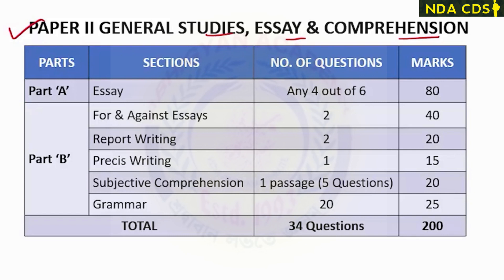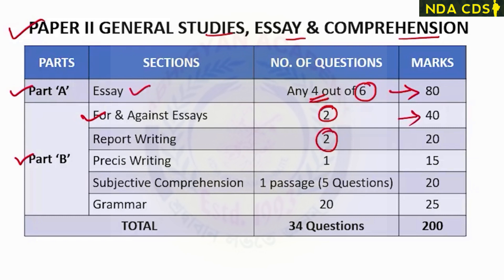Paper 2 is further divided into two parts, Part A and Part B. Part A is for essay writing. There will be a total of six options, out of which you need to attempt any four essays. Total marks allotted for essay writing is 80, meaning 20 marks are allotted to each essay. Part B is further divided into five parts. First, there will be two questions from argument writing, where you write for and against on the given topic, for 40 marks. Then there will be two questions for report writing, which will be 20 marks.